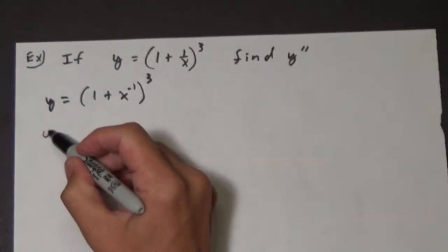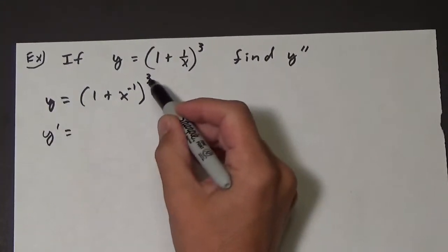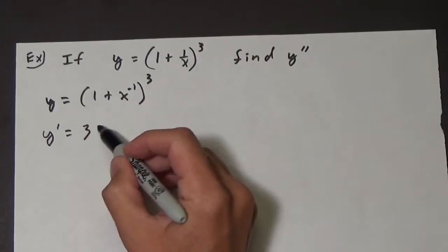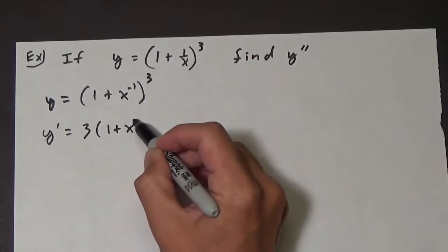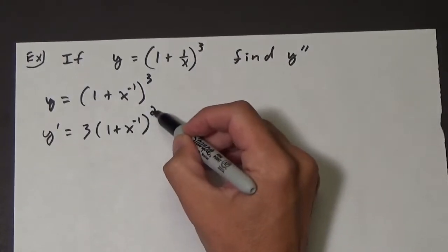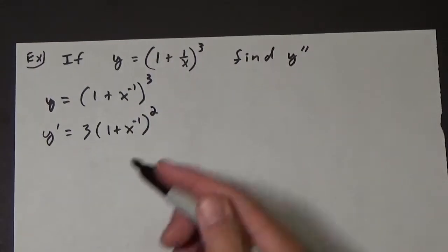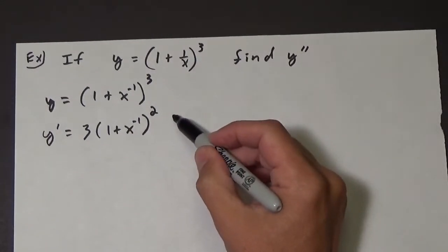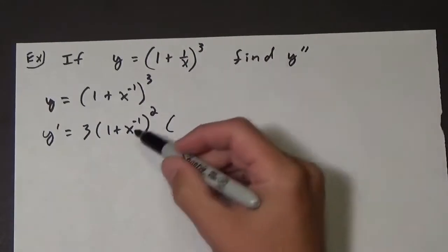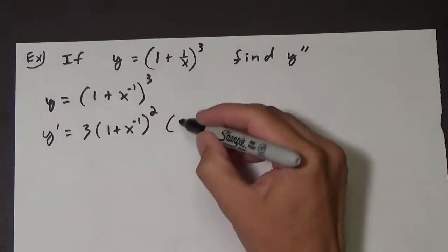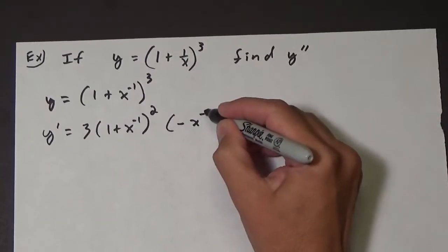So let's get the first derivative. So y prime is going to be, bring out the 3, 1 plus x to the negative 1, that becomes squared. And then we need the derivative of the thing inside. The derivative of 1 is 0, the derivative of x to the negative 1 is negative x to the negative 2.